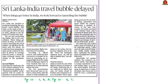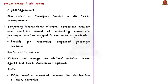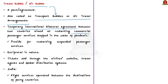Now let's move on to the next news article, which talks about travel bubbles. A travel bubble — also called an air bubble, transport bubble, or air travel agreement — is a temporary international bilateral agreement between two countries which aims to restart commercial passenger services that were stopped in the wake of the pandemic. As a result of COVID-19, regular international flights were suspended to and from India, and similarly for other countries.